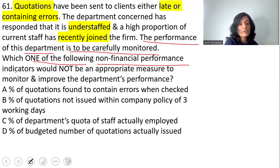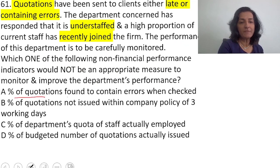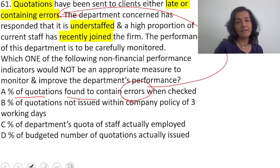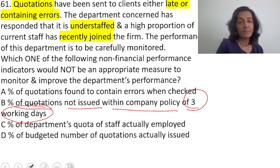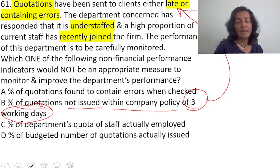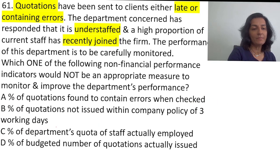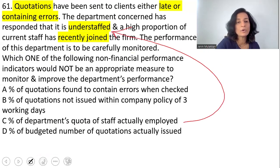Which one of the following non-financial performance indicators would NOT be an appropriate measure to monitor and improve the department's performance? Option A: percentage of quotations found to contain errors when checked — this directly highlights the existing problem, so it's a good performance measure. Option B: percentage of quotations not issued within the company policy of three working days — this highlights the late-sending problem, so it's also good. Option C: percentage of the department's quota of staff actually employed — this highlights understaffing, so it's good.